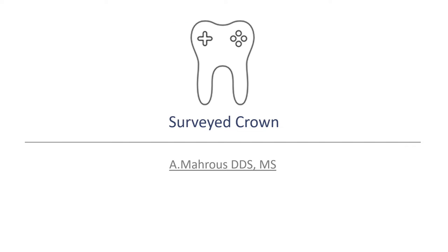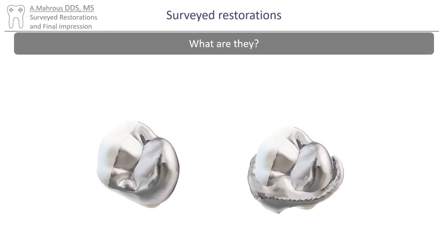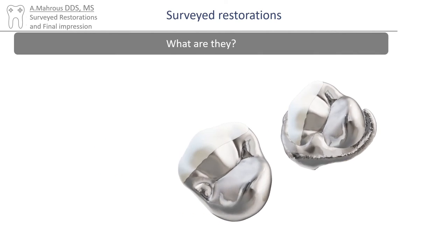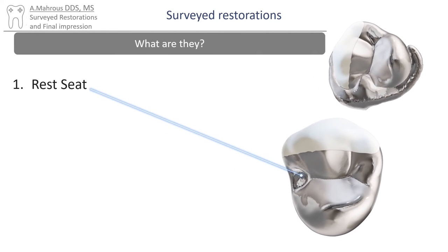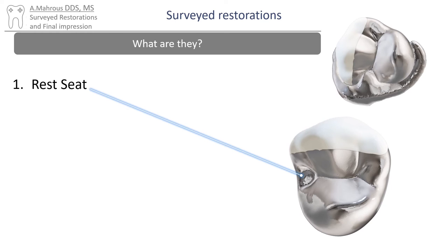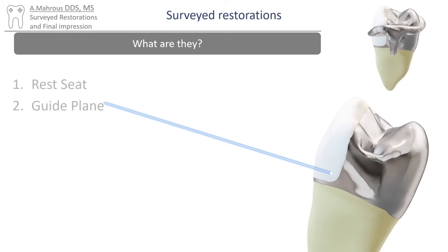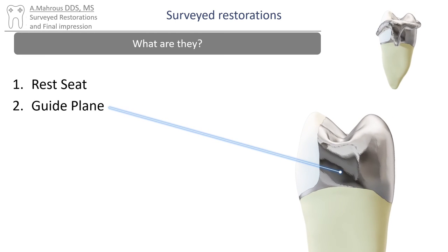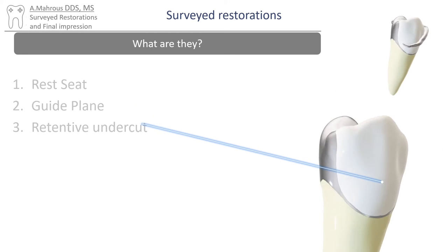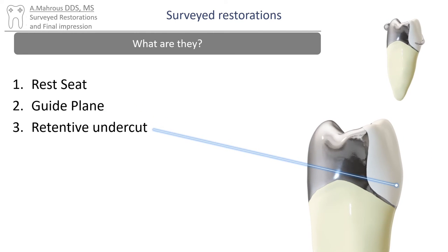Now let's talk about surveyed crowns. They are fixed restorations that have built-in tooth modifications for RPDs, like built-in rest seats, built-in guide planes, and built-in retentive undercuts.